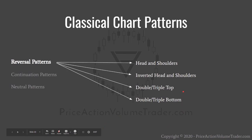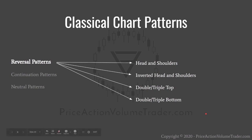Let's dive into reversals. We're going to look at four patterns — really two, but seen differently depending on whether they're found at the top or bottom of movements. The first is the head and shoulders — a super classic, one of the most talked-about patterns. Then we have the inverted head and shoulders, which is the same but in reverse. Then double or triple tops, found at swing highs, and double or triple bottoms at swing lows.